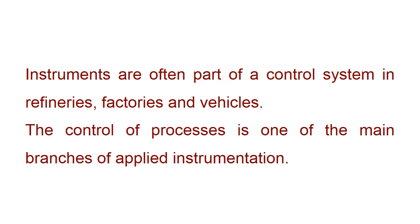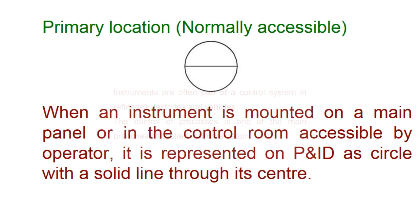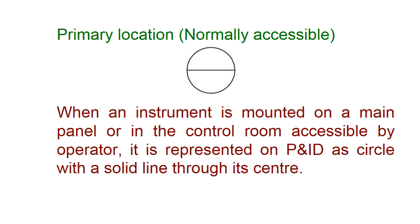Instruments are often part of the control system in refineries, factories, and vehicles. The control of processes is one of the main branches of applied instrumentation. When an instrument is mounted on a main panel or in the control room accessible by an operator, it is represented on the P&ID as a circle with a solid line through its center.